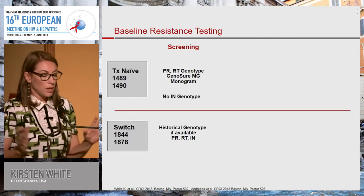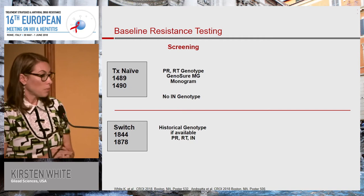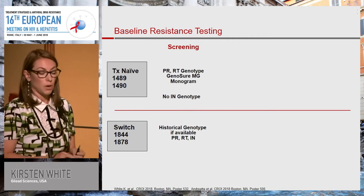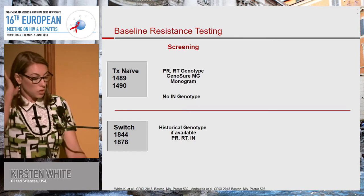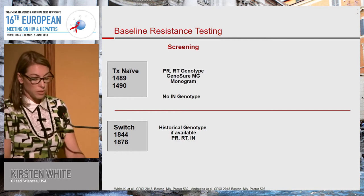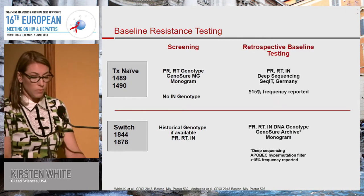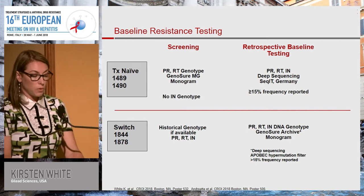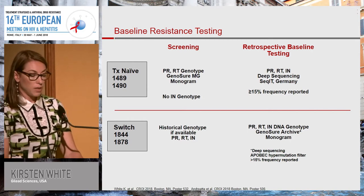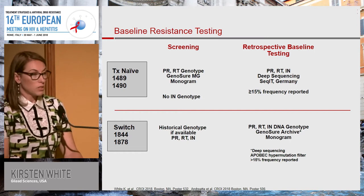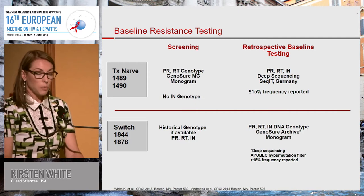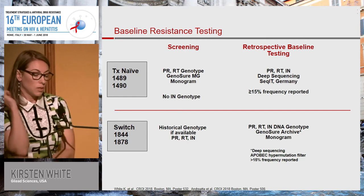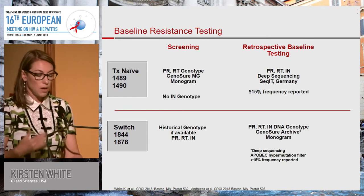Now we can talk about resistance. At screening in these studies, for the treatment-naive studies, we looked only at protease and reverse transcriptase genotype using the GenoSure-MG monogram assay — we didn't do any prospective integrase genotyping. In the switch studies, we had historical genotypes collected if available, and we hand-tabulated those into our database, collecting data on protease, RT, and integrase. Once everyone was enrolled, we went back and looked at everyone in the naive studies using a deep sequencing approach with CKIT in Germany, reporting mutations present at greater than or equal to 15%.